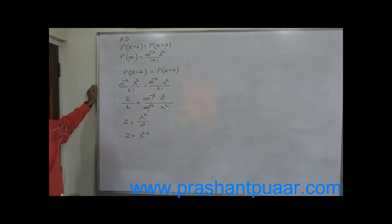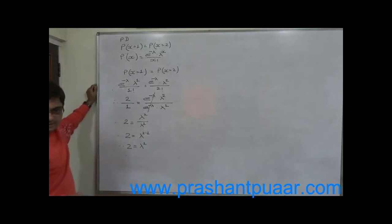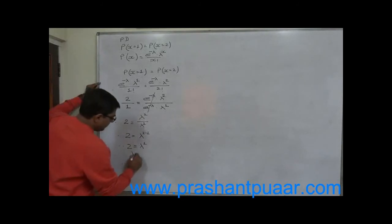If base division of base, then subtraction of powers. So 2 equals to mean raise to 1, and anything raise to 1 remains same. So mean equals to 2.